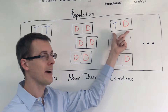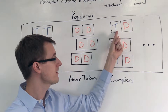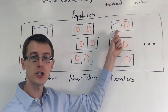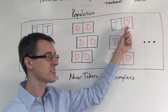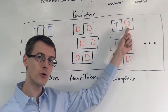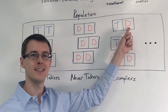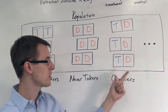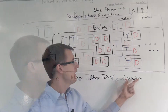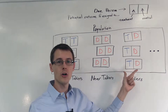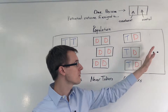Finally, this person here — when they're assigned to the treatment, they actually take the treatment. When they're assigned to the control group, they don't take the treatment. So this person is a complier. And there are other people in the population who are also compliers.